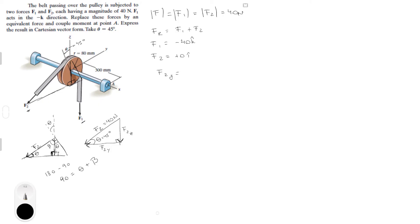F2Y equals F2 cosine of theta, going in the negative J direction, so it's negative 28.3 newtons J. F2Z is F2 sine of theta in the negative K direction, so it's negative 28.3 newtons K. F2 equals minus 28.3J minus 28.3K. To find the resultant force, we just add F1 and F2.